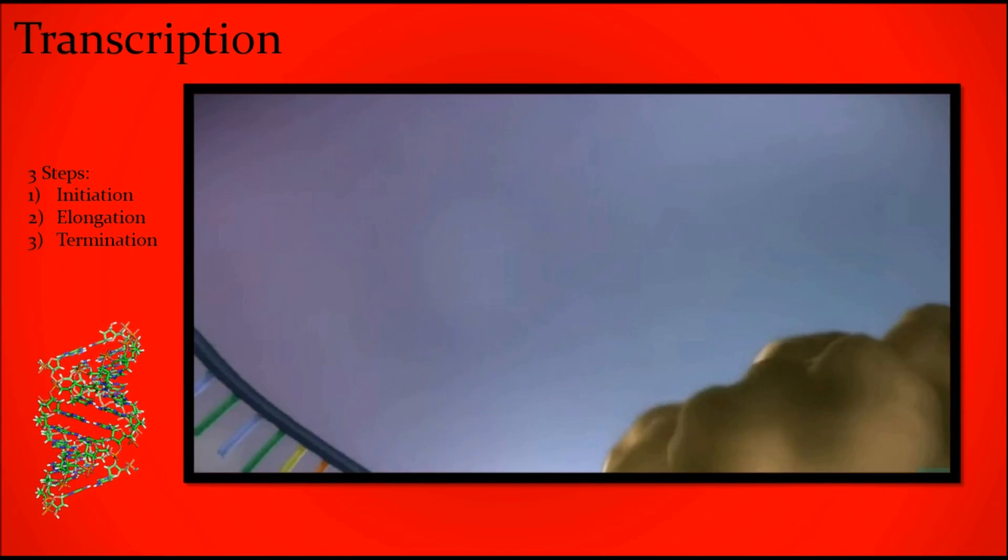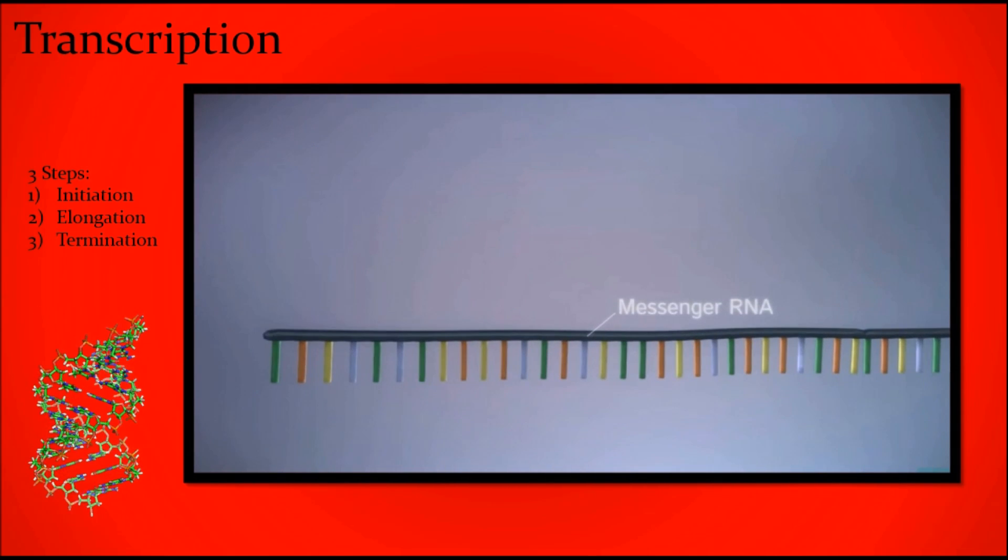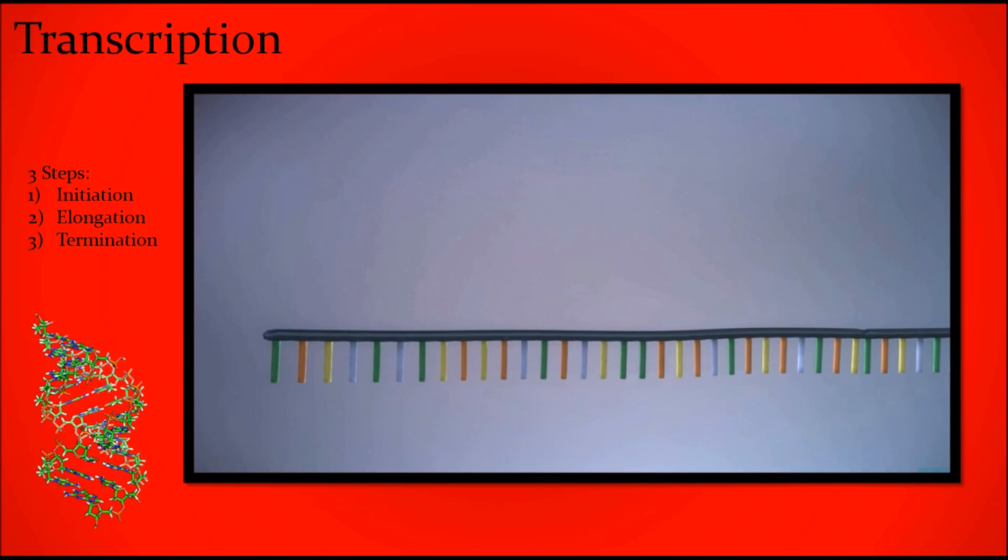Promoter binding, then elongation - polymerase moves downstream, then termination - RNA released